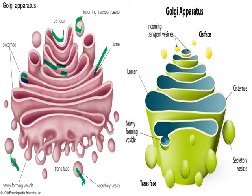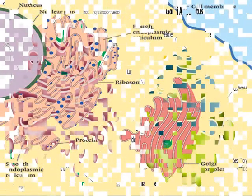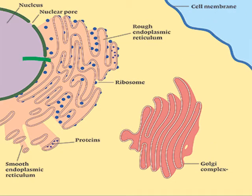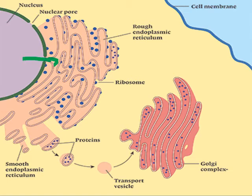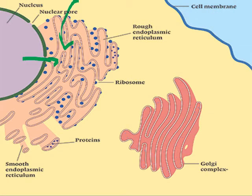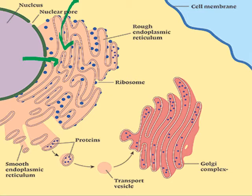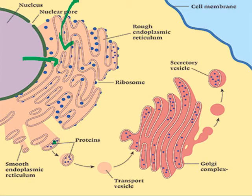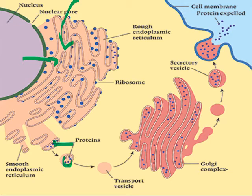Incoming transport vesicles arrive at the cis face. The trans face releases secretary vesicles. The cisternae lumen contains newly forming vesicles. In the form of vesicles, substances move from the nucleus and cytoplasm through the endoplasm. This shows the transport pathway of the Golgi Complex.